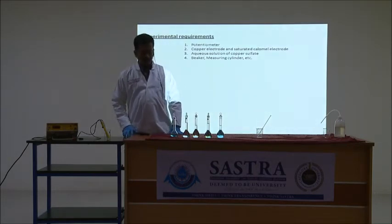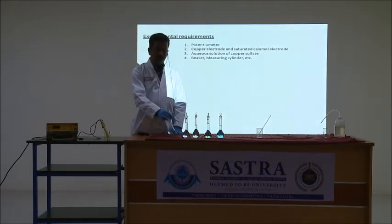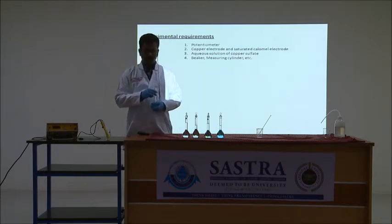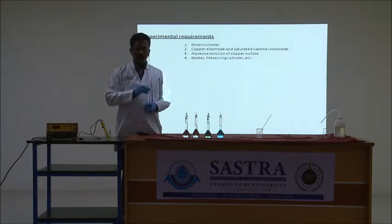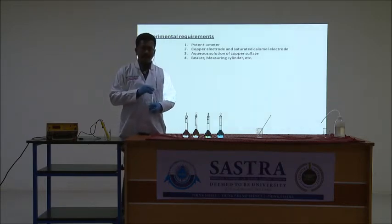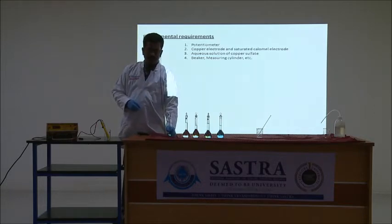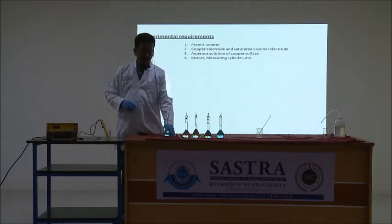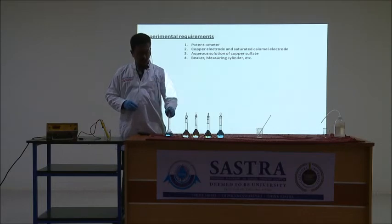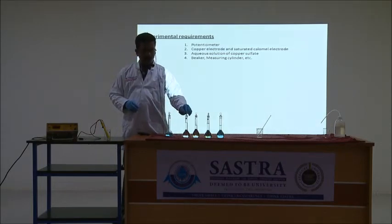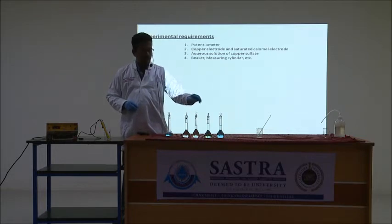Among the copper sulfate solutions, first prepare a 0.1 molar copper sulfate solution. While making up this solution, add 5 ml of acetic acid into it. Addition of acetic acid suppresses the hydrolysis of copper sulfate. Once this solution is prepared, dilute it to form 0.01, 0.02, and 0.05 molar copper sulfate solutions.